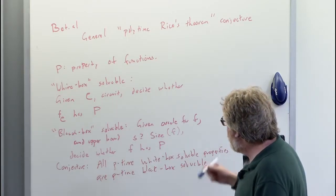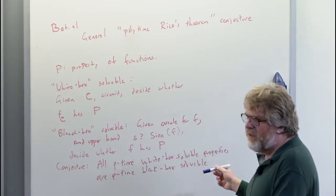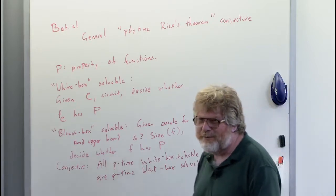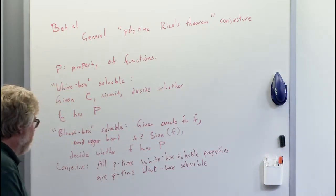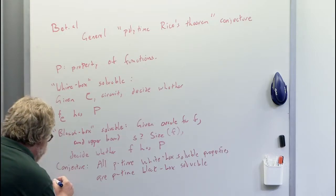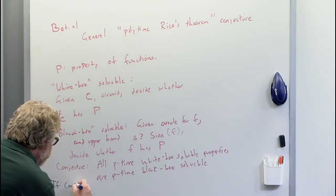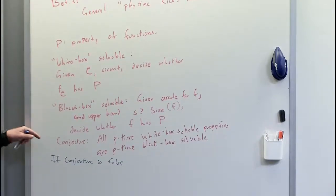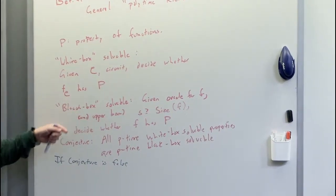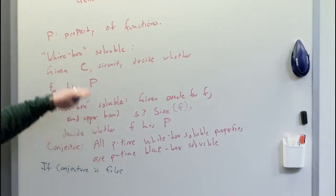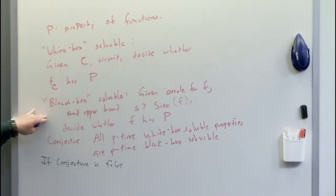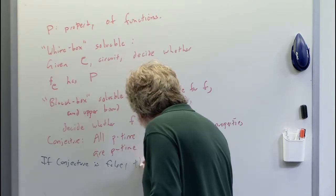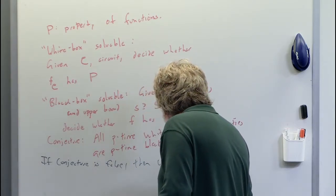So one thing you could do is try to prove this conjecture — though it seems very difficult, since as a first step it involves proving P not equal to NP, and so on, because that's a circuit analysis problem. But the generic way of saying circuit analysis is connected to lower bounds is: if this conjecture is false — if some property is solvable in the white-box setting but not the black-box setting — then some kind of circuit lower bound follows.